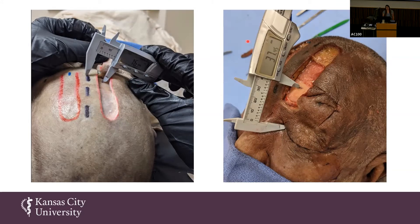This slide is an example of how we did the measuring. On the left, it's the midline to the location of the supratrochlear artery pedicle, which is that little black dot. On the right, we're measuring the medial canthus — essentially the inner eye — to the supratrochlear artery pedicle.